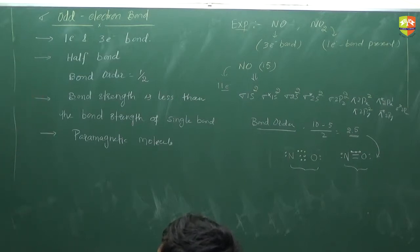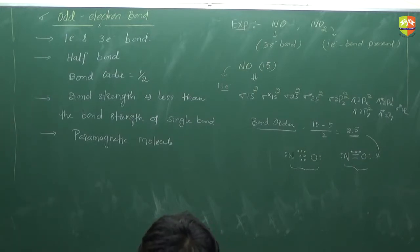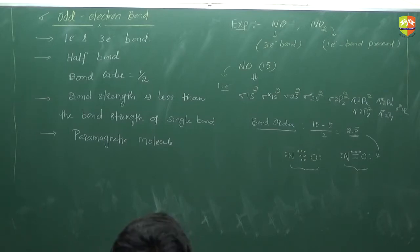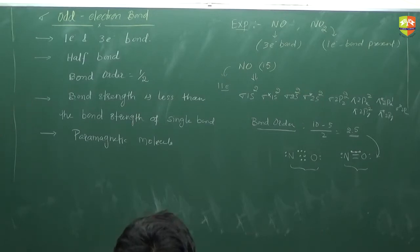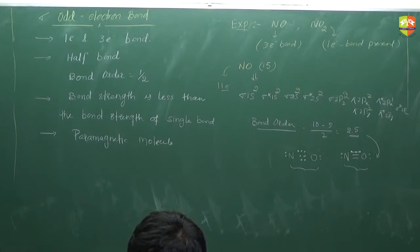If you simply write a triple bond there, its bond order should be 3 — which is not what we are getting. So according to the bond order, the structure must have an odd electron bond or a half bond. That's why the bond order of an odd electron bond is always half. Wherever you get 0.5 in the bond order, it means there is a half bond — that means an odd electron bond, which is a 1-electron or 3-electron bond.